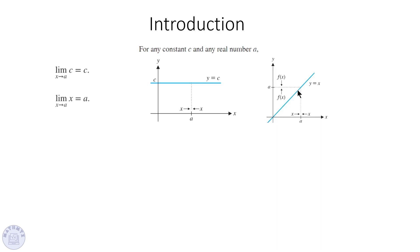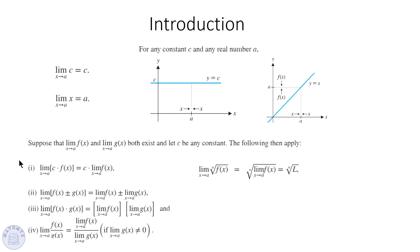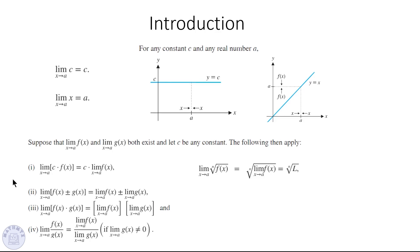Here are a couple of properties for limits. When we have a function multiplied by a scalar, you can multiply the limit with a constant. The limit can be distributed inside the sum and difference of two functions. Also for the product you can distribute the limit, and for the quotient, and the limit can be distributed inside a radical. The limit of a polynomial is basically direct substitution.